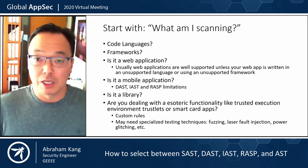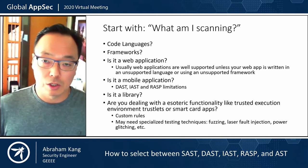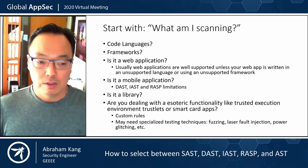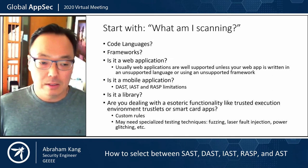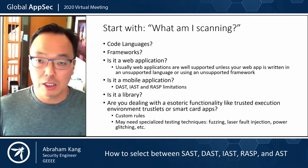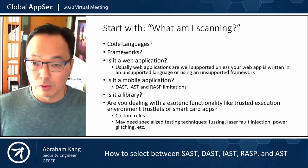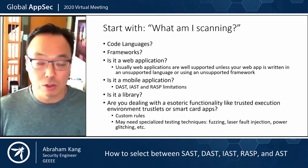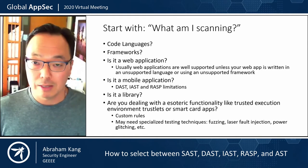To give you an example, web applications are pretty well supported. But mobile applications are going to be difficult for DAST, IAST, and RASP, and we're going to discuss why. If you're dealing with things like trustlets, most scanning tools don't have researchers writing rules to find vulnerabilities in those types of applications. So if you try scanning your trustlet apps, don't expect to find anything besides quality issues.